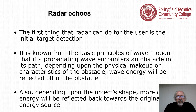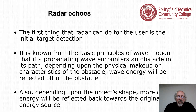Any echo signal received indicates some type of target has reflected the transmitted signal. The first thing radar can do is initial target detection. If a propagating wave encounters an obstacle in its path, depending upon the physical makeup of the obstacle, wave energy will be reflected off of it. We know this from everyday experience — echoes of sound waves bouncing off a wall, the side of a canyon, or a building.